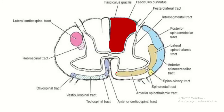This is the cross-section of the spinal cord. This is the H-shaped inner gray matter and the outer white matter. This is the ventral horn and this is the dorsal horn. Just medial to the dorsal horn, this is the location of the tract of gracilis and cuneatus.